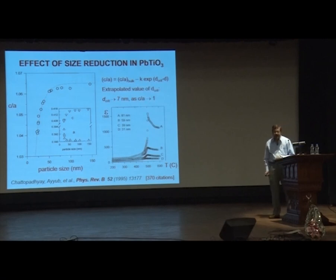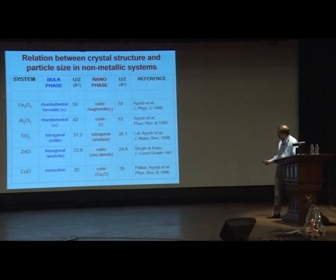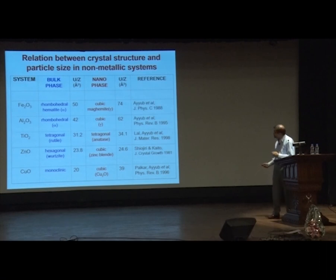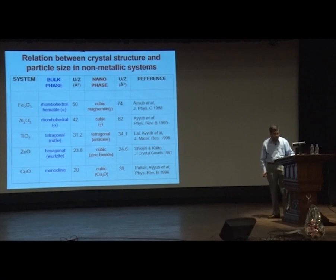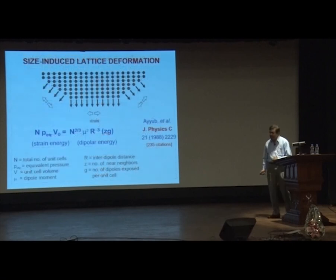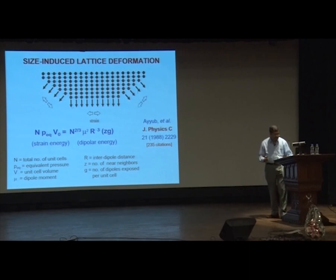This kind of change in structural phase transitions happens in many different kinds of materials. In most of them, you find an increase in the lattice parameter or unit cell volume as you go from the large particle state to the small particle state. The cubic phase has a larger unit cell volume than the rhombohedral phase, and you generally tend to go to more and more symmetric structures as you go down in particle size.